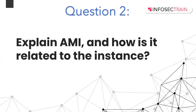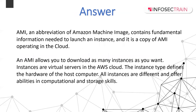The next question: explain AMI and how it is related to the instance. AMI stands for Amazon Machine Image. It contains the fundamental information needed to launch an instance and is a template of the operating system running in the cloud. AMI is similar to the image required on your PC to configure your OS. Just like when you buy a new laptop you need an OS image, in AWS we need this image called the Amazon Machine Image. AMI allows you to launch as many instances as you want, and the instance type defines the hardware of the host computer.